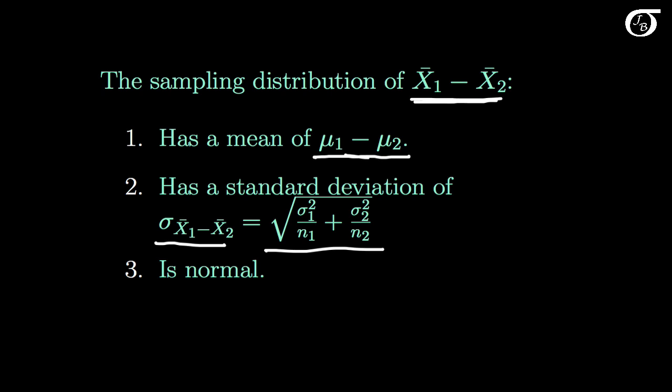And if we're sampling from normally distributed populations, then the sample mean x1 bar will be normal, x2 bar will also be normal, and their difference will be normal as well.